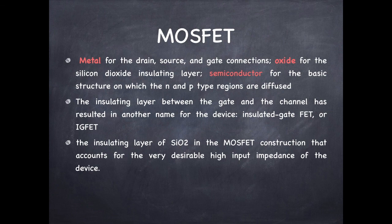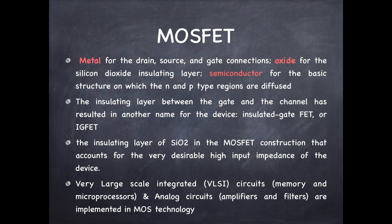The insulating layer of silicon dioxide accounts for very high input impedance which is desirable. Compared to BJT, MOSFETs are made quite small. They require very small area on the silicon chip and their manufacturing process is relatively simple.